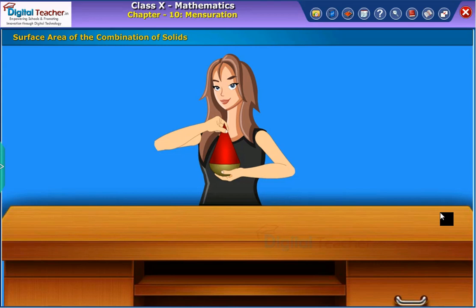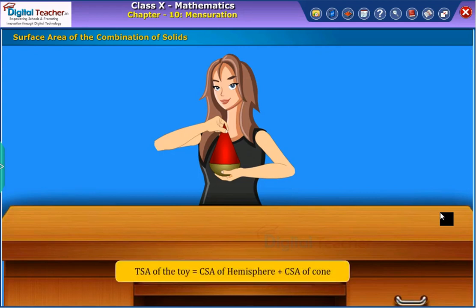Now, she got an idea to paint the surface of the toy. So, in order to paint the surface of the toy, she needs to know about CSA of the hemisphere and CSA of the cone. Hence, it is expressed as shown.